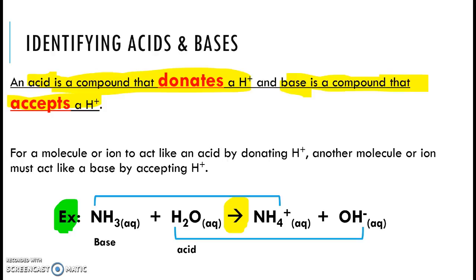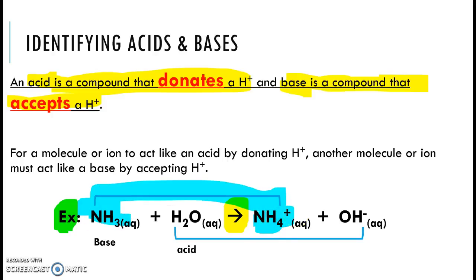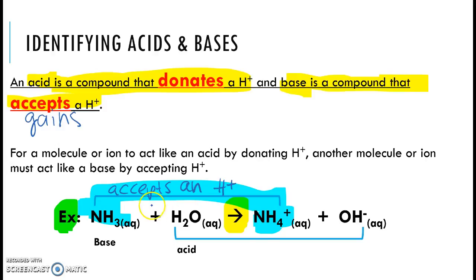There will either be a substance that gains an H+ or loses one. We can see here that NH3 we're going to connect to NH4, because what is happening is NH3 gains — or accepts — an H+. So by definition, the substance that accepts the H+ is our base. Therefore, we label NH3 as our base.